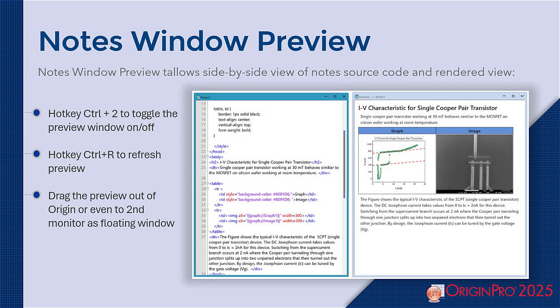In our new and improved notes windows, we can now preview results from any coding or formatting in a separate preview window. This window can be placed anywhere within Origin or as a floating window, useful for multiple monitors. Control+2 toggles the preview window and Control+R updates and refreshes the preview.